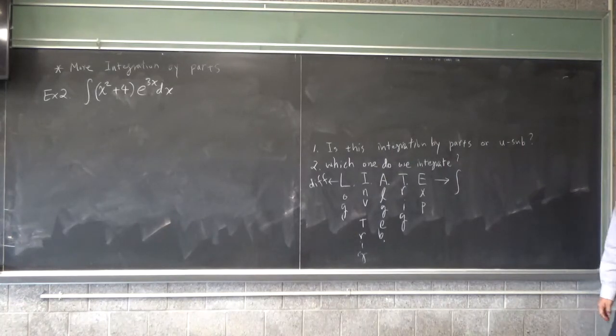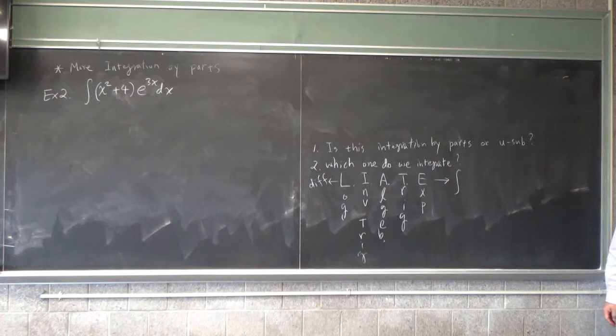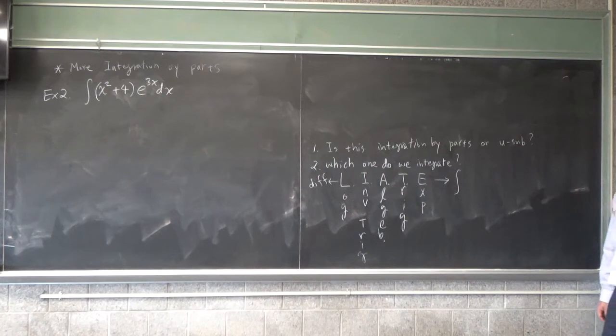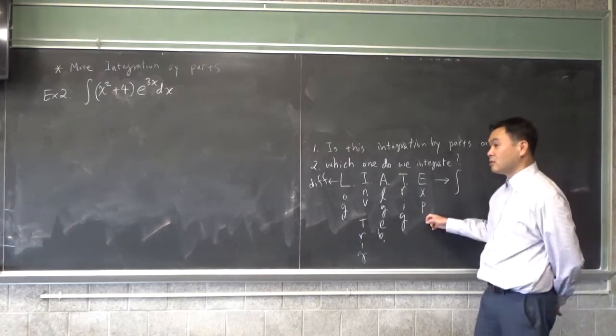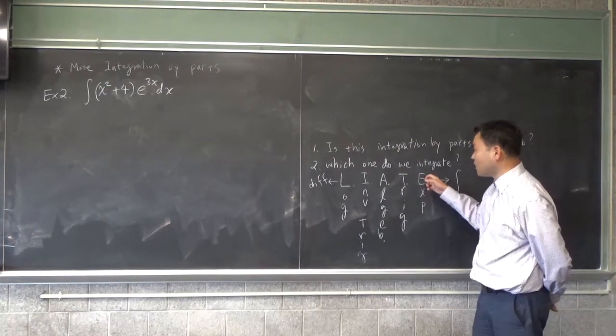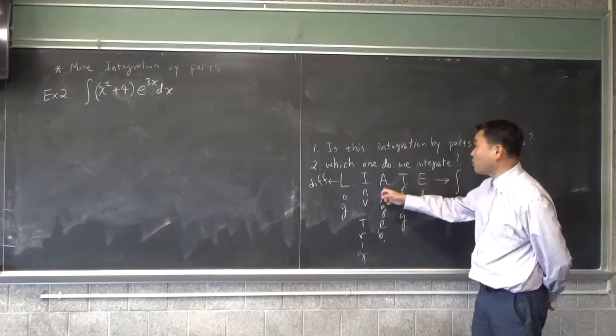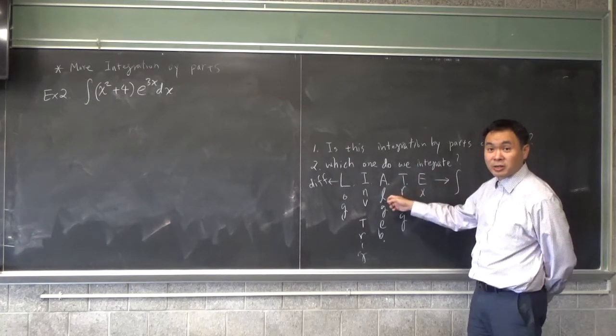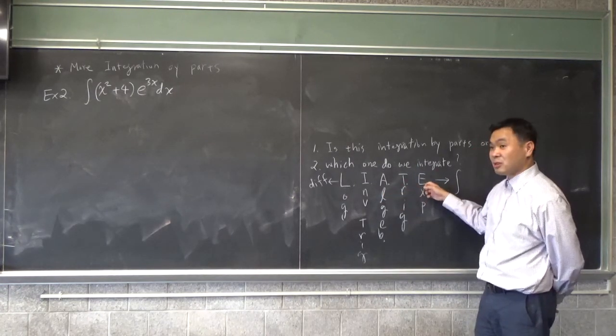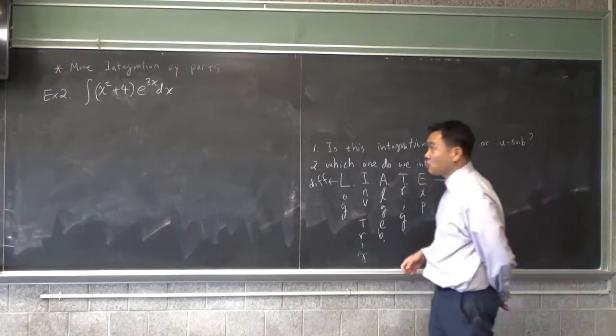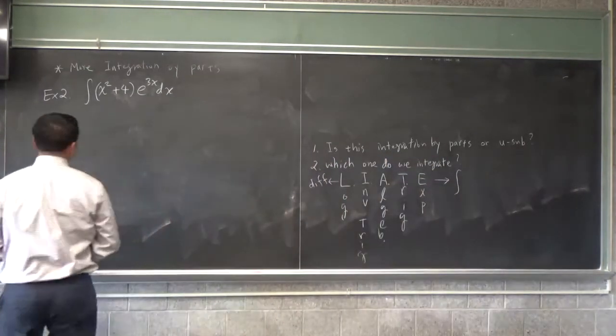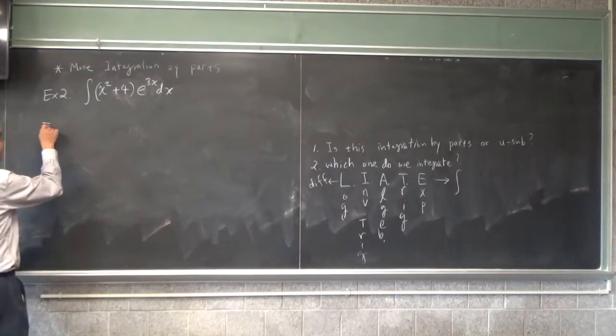Which one should we integrate? Yeah? Wouldn't we do e because it's like a log? E to the 3x. Yeah. That's the one we should integrate. Because x squared is algebraic, right? E is on the right side, so we should be integrating the exponential function. Okay, once you've chosen that, now let's write it down.